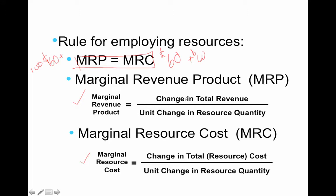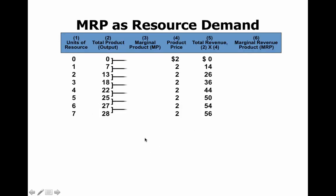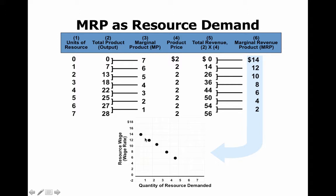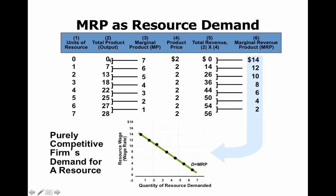Here are the definitions: change in total revenue over unit change in resource quantity, and change in total resource cost over unit change in resource quantity — very similar to what we've seen in the product market. Looking at the graph, marginal product is shown here: when you hire one additional unit of a resource, the first person produces 7, so marginal product is 7 as we move from zero to seven, then the second produces 6, moving from 7 to 13, and so on.